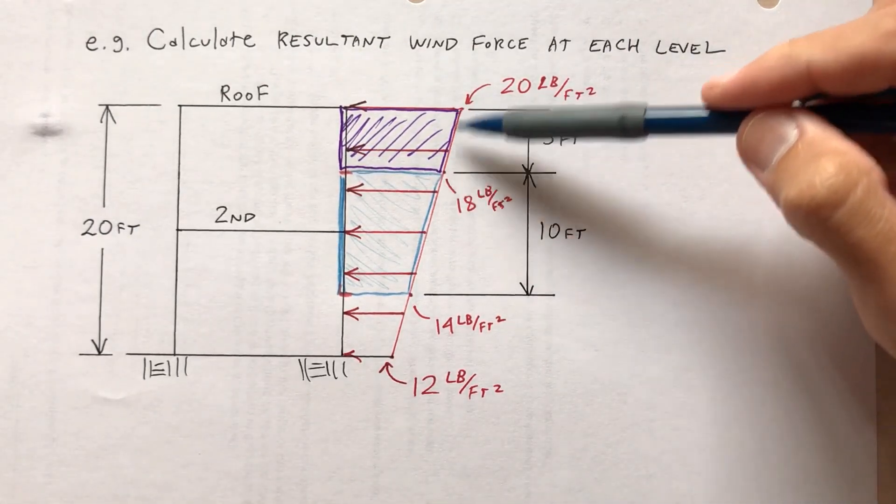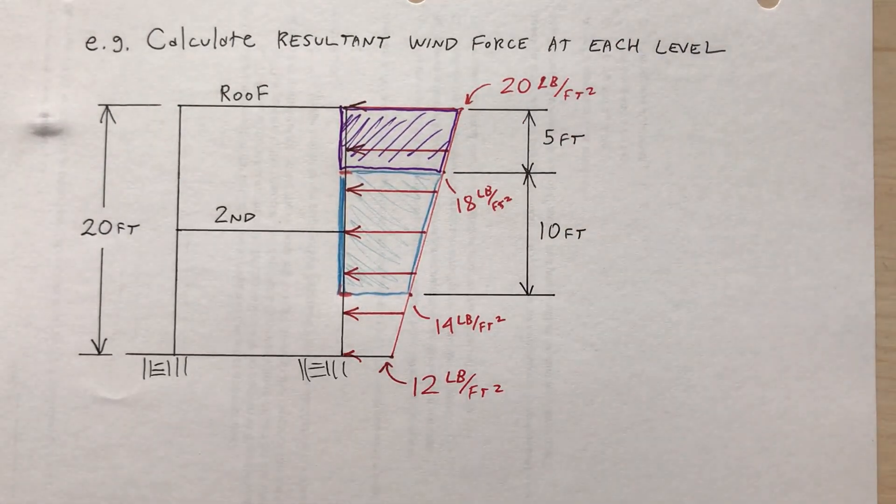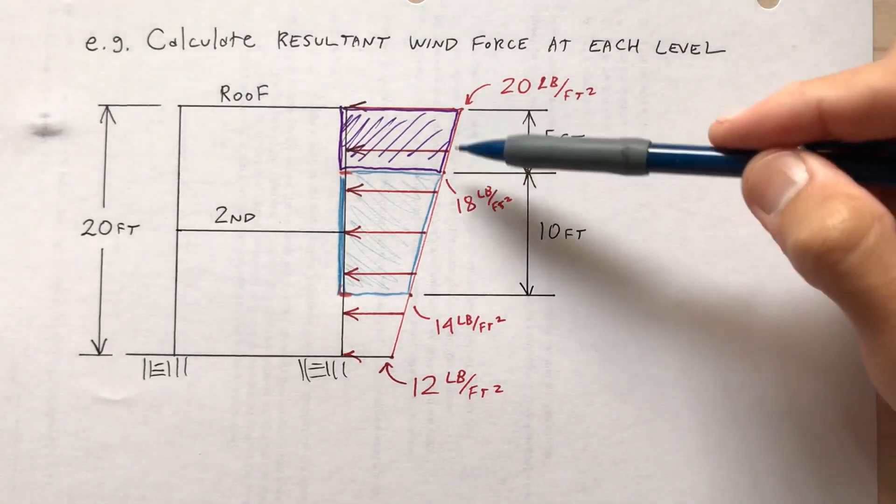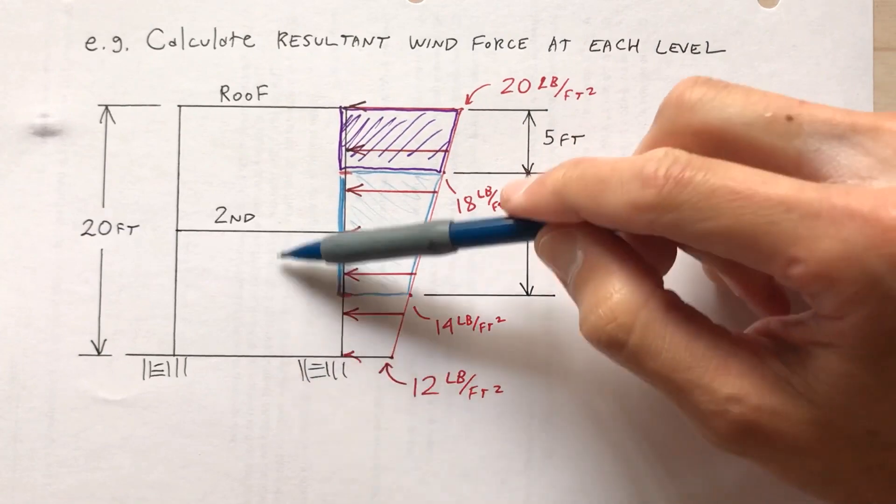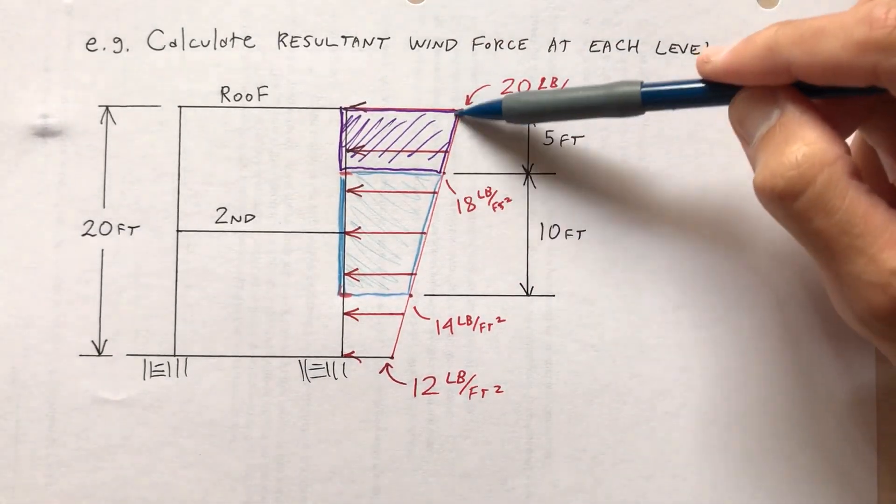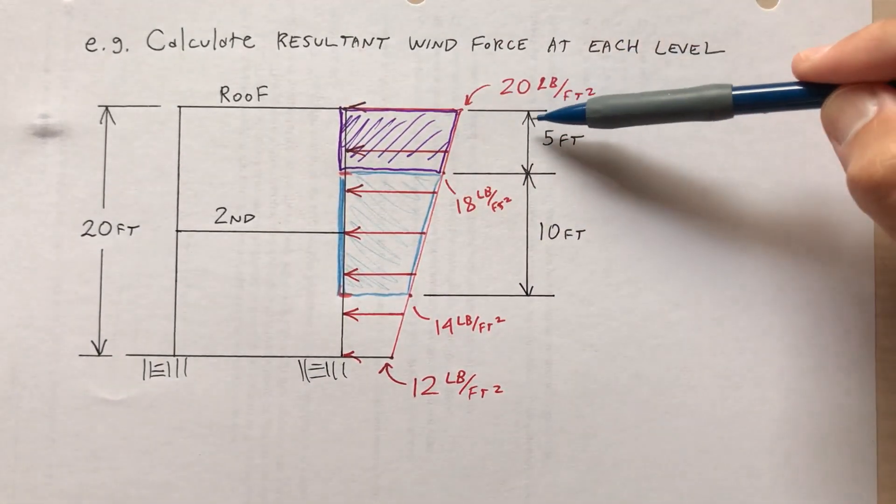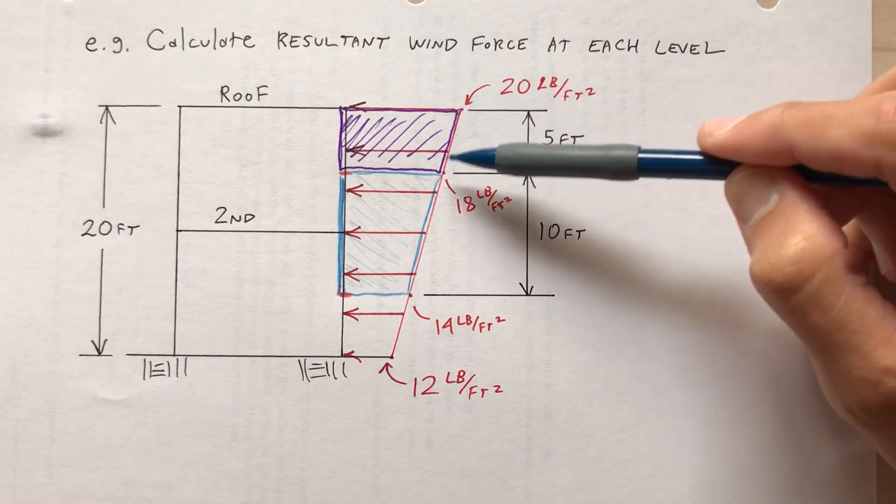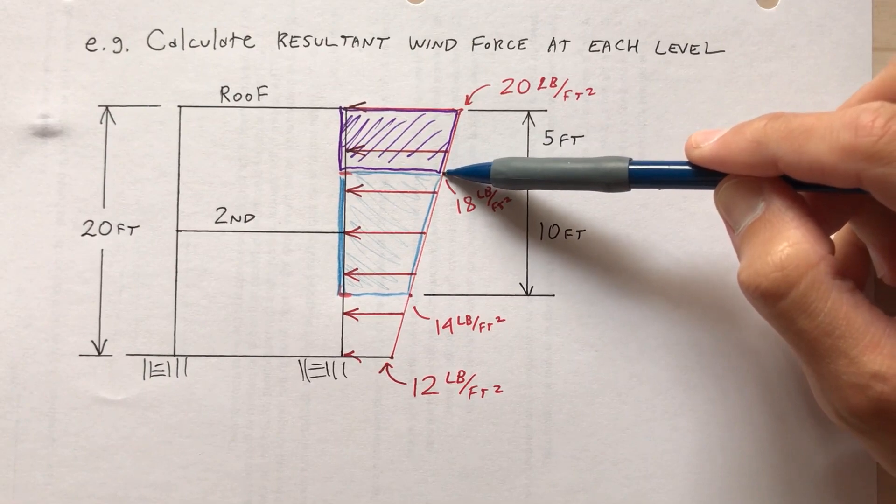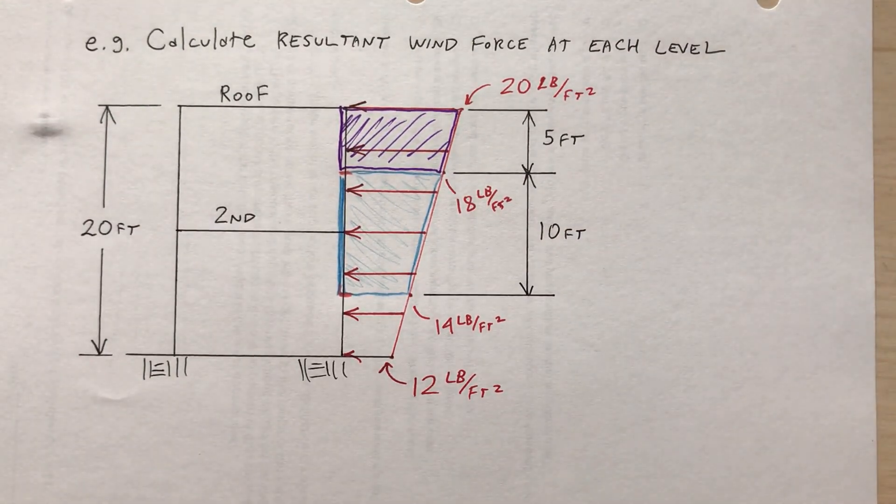Put some dimensions on there, this portion that is acting on the roof, this portion of the wind load that's acting on the roof, five feet high. Now I'm assuming that each of these floors is 10 feet. So this is five feet, I've got this trapezoidal purple load, five feet, the magnitude of the wind 20 pounds per square foot at the top, 18 at the bottom of the load that is applied to the roof.